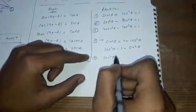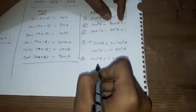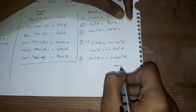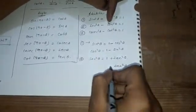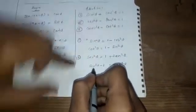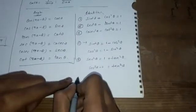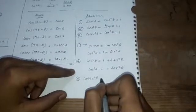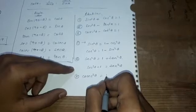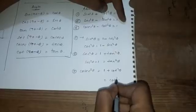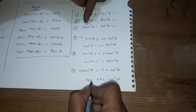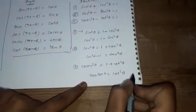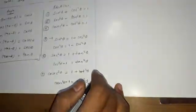The second identity is: sec²θ − tan²θ = 1, which can also be written as sec²θ − 1 = tan²θ. The third identity is: cosec²θ − cot²θ = 1, which can also be written as cosec²θ − 1 = cot²θ.